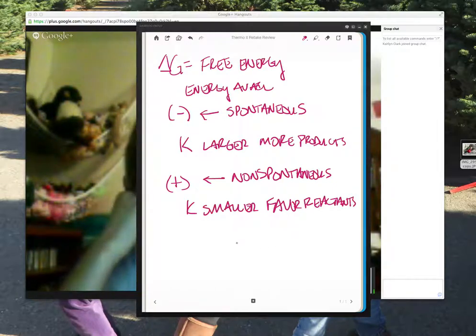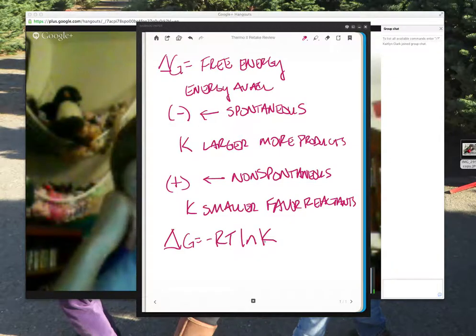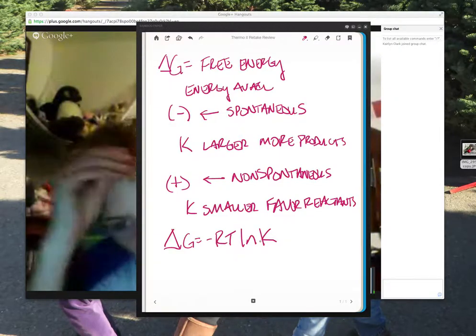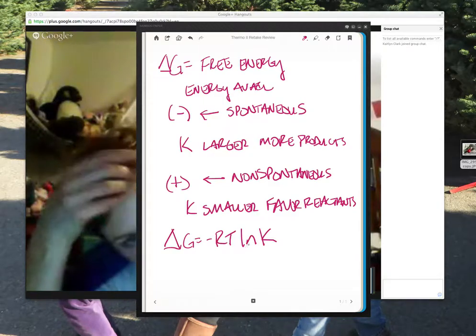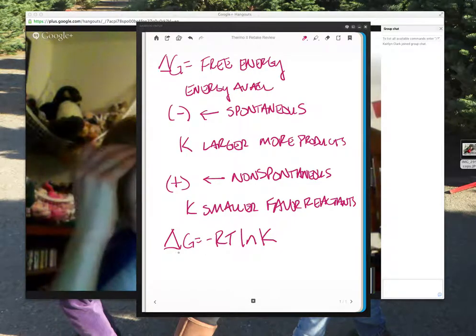Usually they're connected like that, but interestingly enough, you can still do delta G equals negative RT natural log of K. So this is one of those things where the smaller your K is, especially if you get lower than one, then natural log of that number is going to be negative and a negative times a negative gives you a positive. Does that make sense?